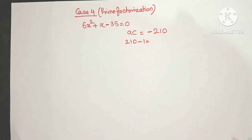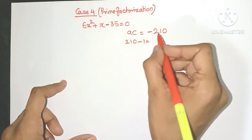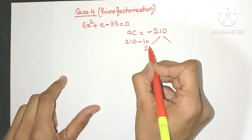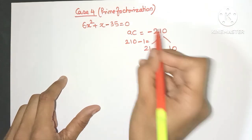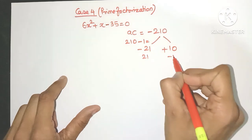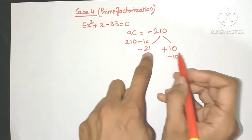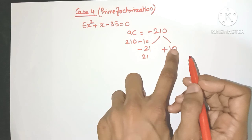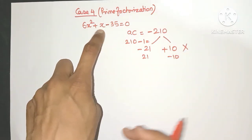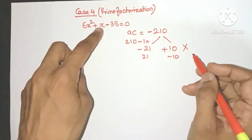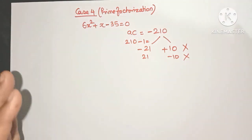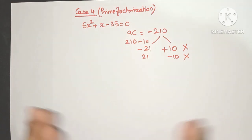What about Case 2? It is a multiple of 10, so we try splitting as 21 and 10. With the minus sign, the two options are minus 21 plus 10 and plus 21 minus 10. Minus 21 plus 10 does not give plus 1, and 21 minus 10 gives 11, not 1. So Case 2 is not working here either.